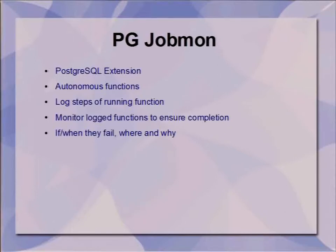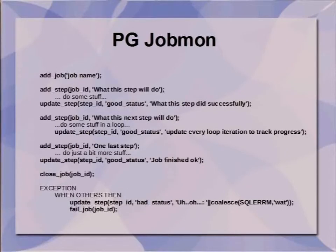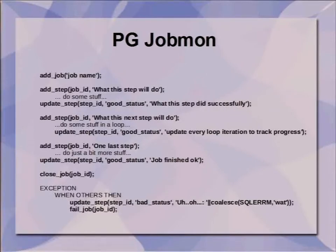It also allows you to integrate monitoring tools to keep track of when something fails and alert you. The basic API is: call add_job to add a job and give it a name, add a step defining what that step will do, then update the step with what it did and how. This makes it easy to track really long-running functions — you call updates in a loop, query the jobmon table, and it keeps track of things like how many rows it's processing. If you want to add another step, just call add_step again. For failure handling, you can put a failed_job call in the exception block to capture the error message.